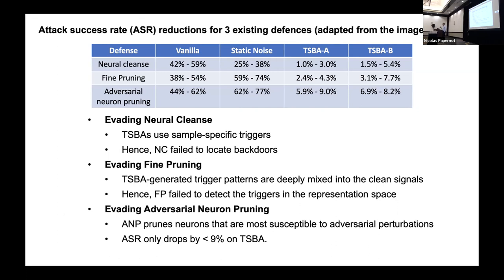When we submitted the paper, referees suggested applying existing image-based defenses to see whether they could stop this attack. The story is that existing image backdoor defenses work quite well at stopping our naive baselines — vanilla and static noise — but they don't work well for stopping our proposed attack, reducing the success rate by only 1–5%.